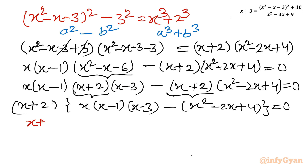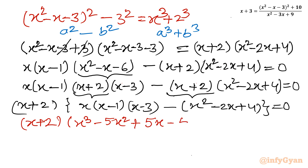After simplification of the curly bracket — taking the product of all terms — writing directly: (x + 2)(x³ - 5x² + 5x - 4) = 0. At this point you can use the rational root theorem and synthetic division method, but I will use factorization itself.